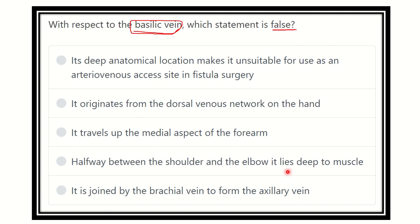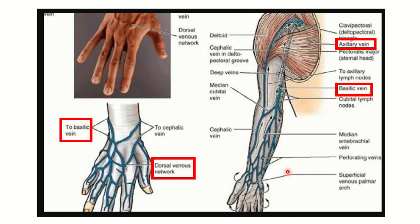First, let's review the basilic vein. It is one of the superficial veins of the upper limb. Looking at the dorsal venous network in the upper arm — both the basilic vein and the cephalic vein are formed from this dorsal venous network.